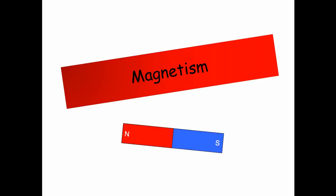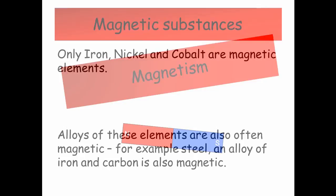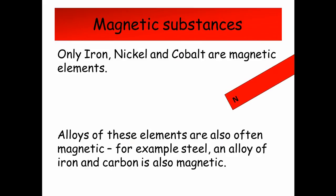Hi guys, today I want to do a review of magnetism with you. Magnetic substances: only iron, nickel and cobalt are magnetic elements. Alloys of these elements are also often magnetic, for example steel, an alloy of iron and carbon, is also magnetic.